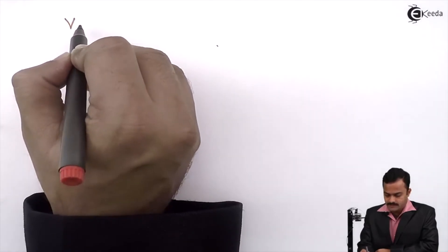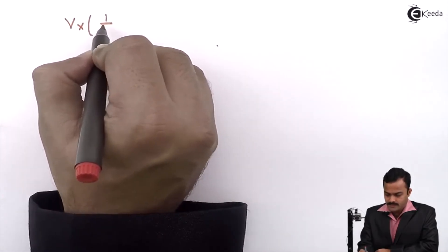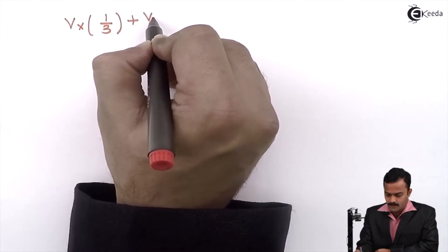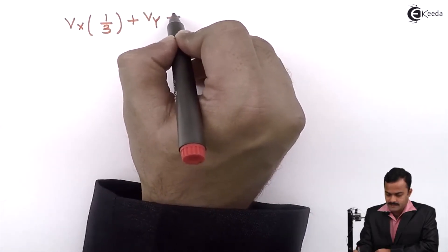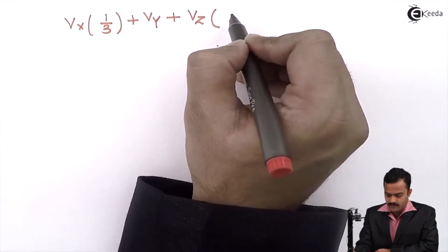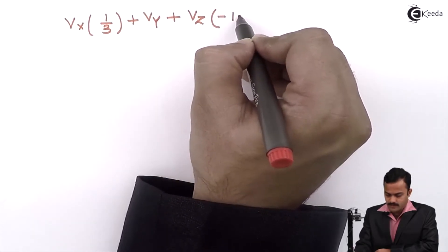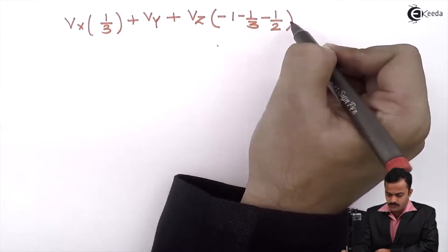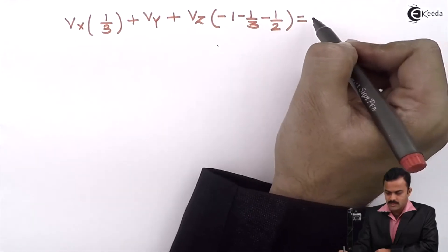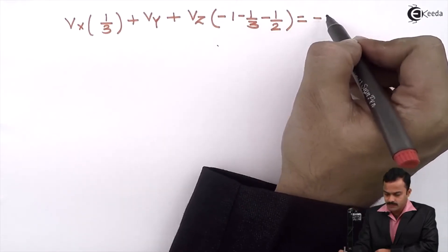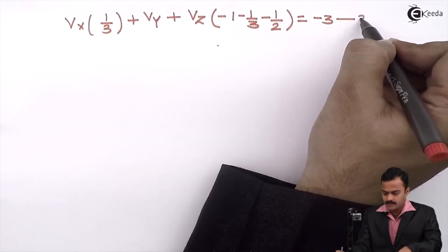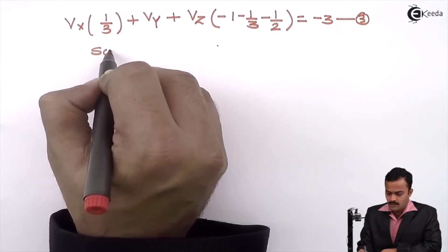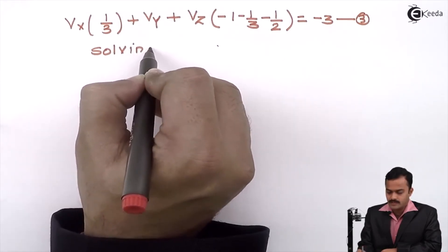Rearranging the terms, I get Vx times (1/3), Vy times 1, and Vz times (−1 − 1/3 − 1/2), equal to a constant. Taking the constant to the other side gives minus 3. This is equation number 3.